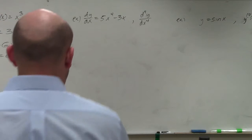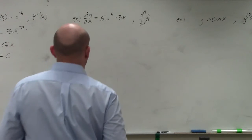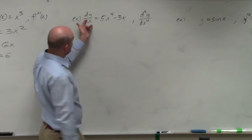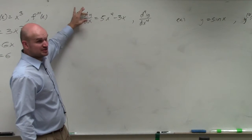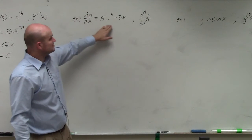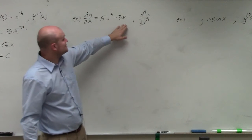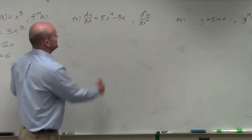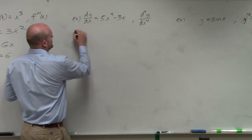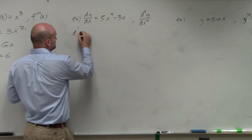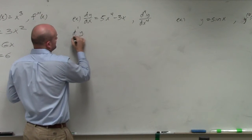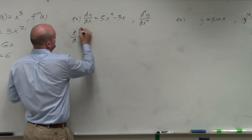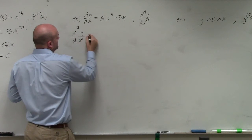This is just notation, different notation. So this is actually the derivative of one of those sources, dy/dx. So you have 5x to the fourth minus 3x. So therefore, you would have d squared y over dx squared.